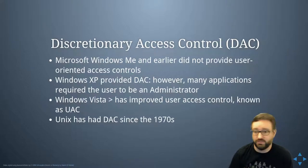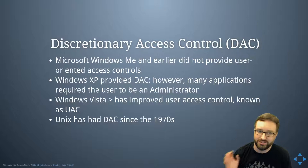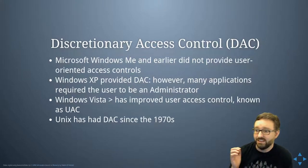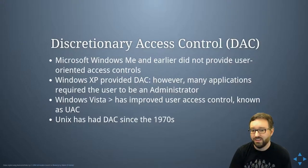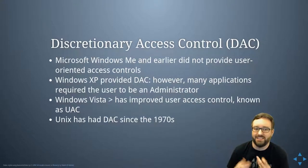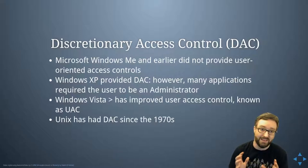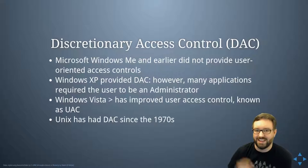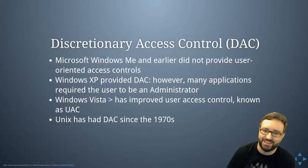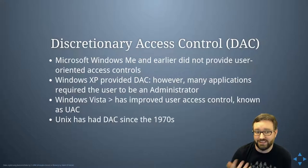Older versions of Windows — Windows Millennium Edition and anything earlier like Windows 95 — didn't actually provide any user-oriented access controls at all. Basically everyone was an admin. The login screen was literally just: if you know the password, you get your desktop wallpaper and set of icons, but there was nothing else there in terms of access restrictions.